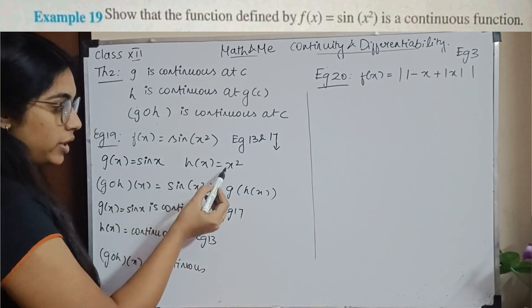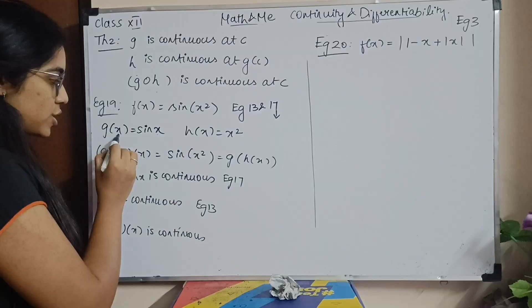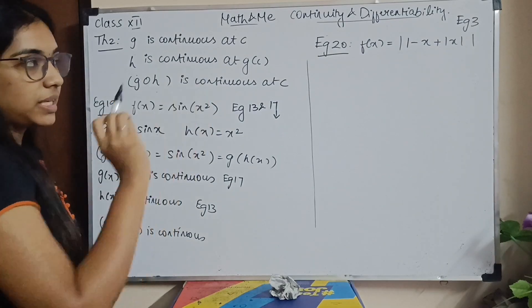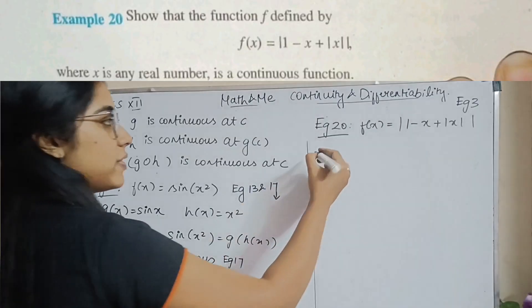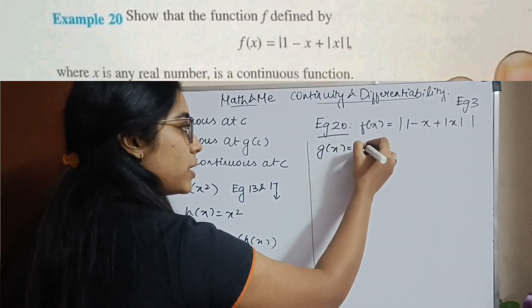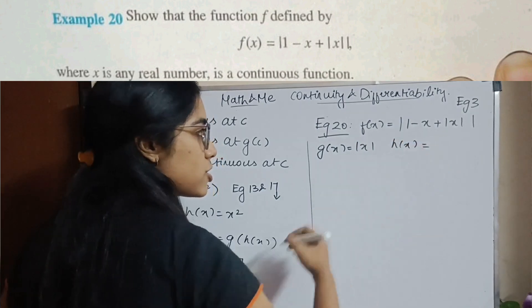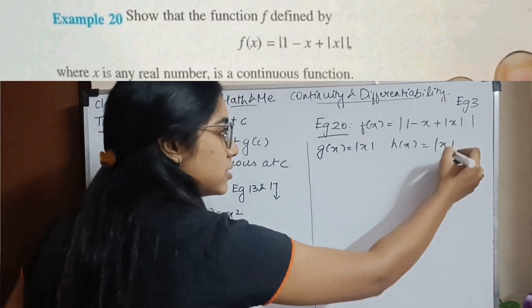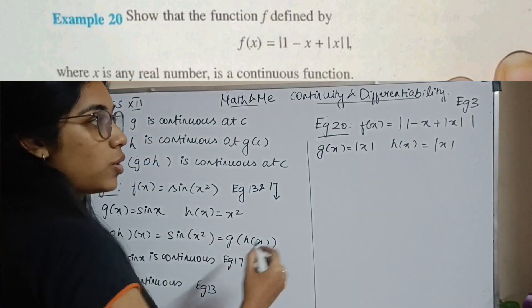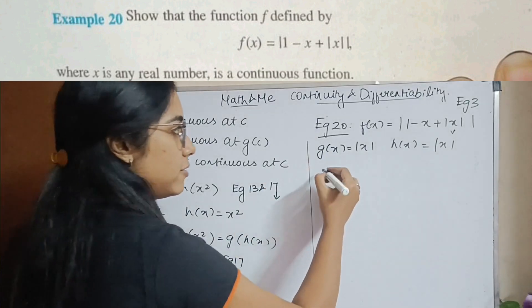So instead of X I put X², which is H(X), giving G of H(X) = sin(X²). Example 20: here G(X) = |X| and H(X) is also some function involving a mod.